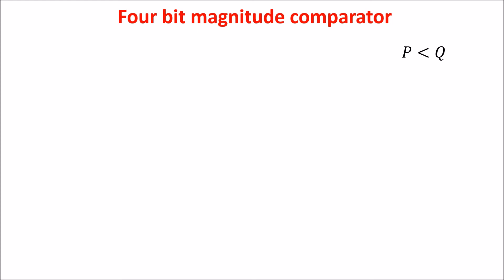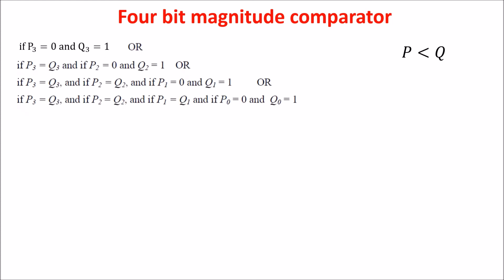Similarly, the statements for getting the expression for PS less than QS are these, which can be written in this way. There is just an inversion in the P bits, which we want to be 0, and the corresponding Q bits, which we want to be 1.